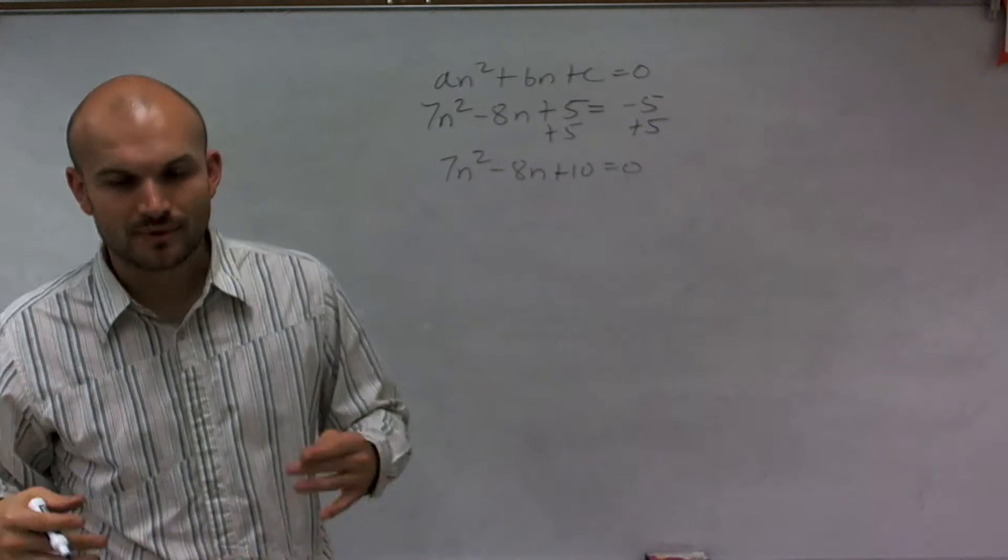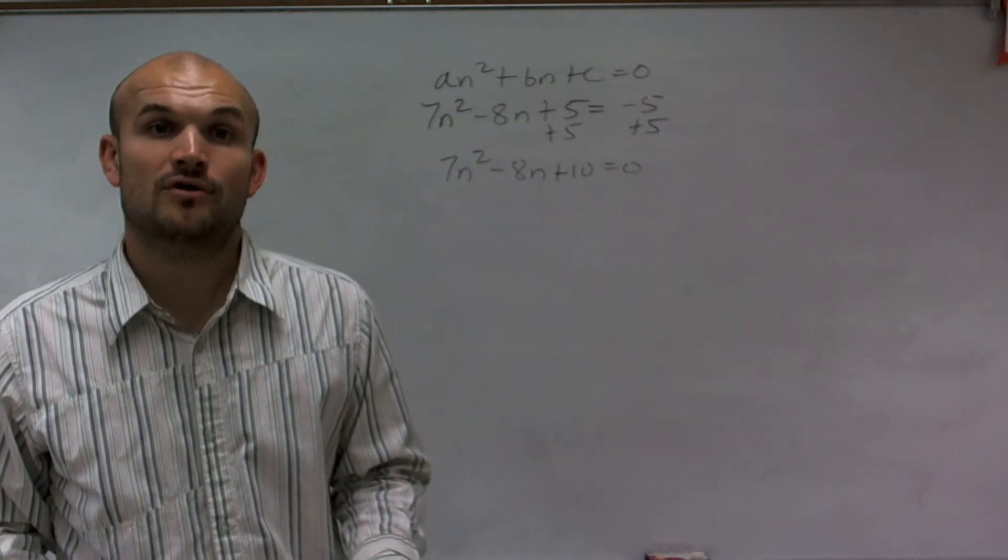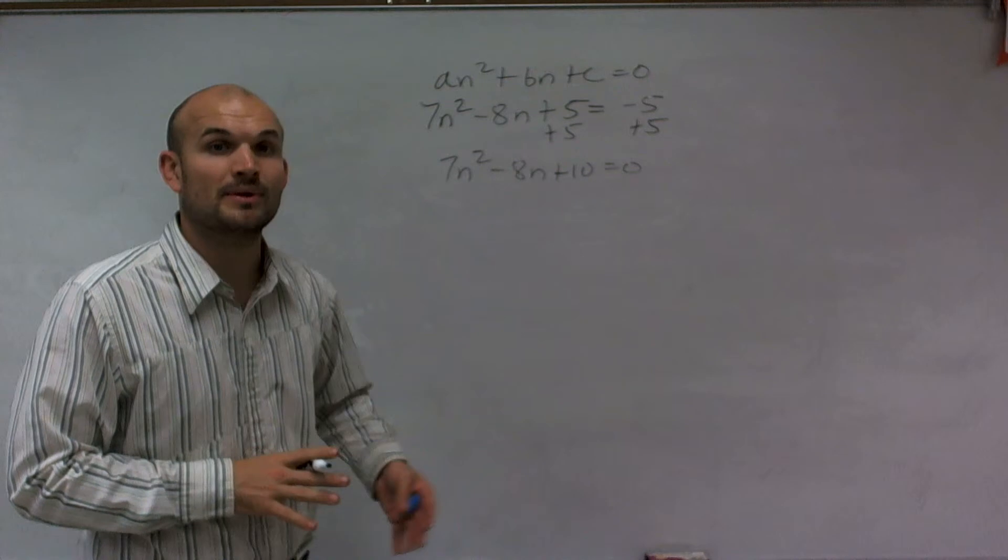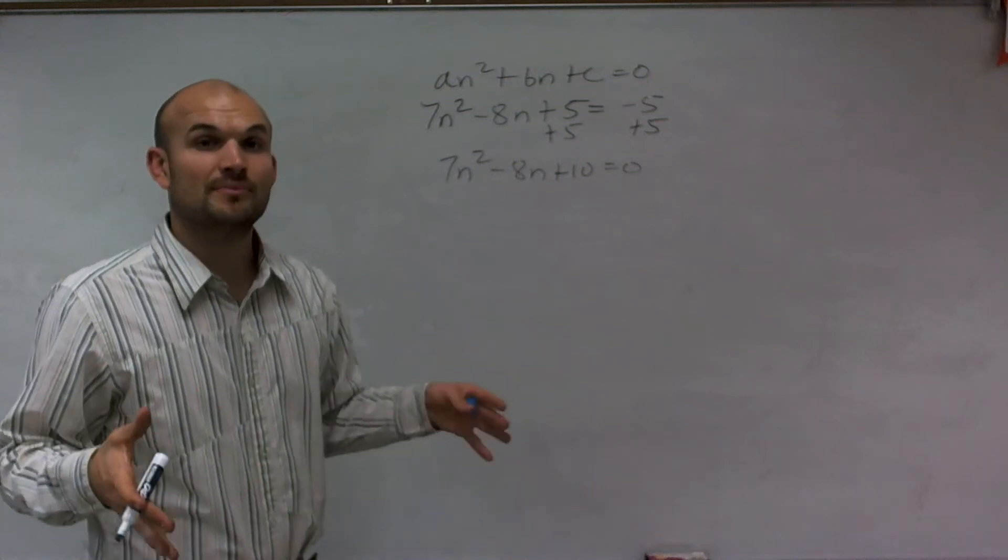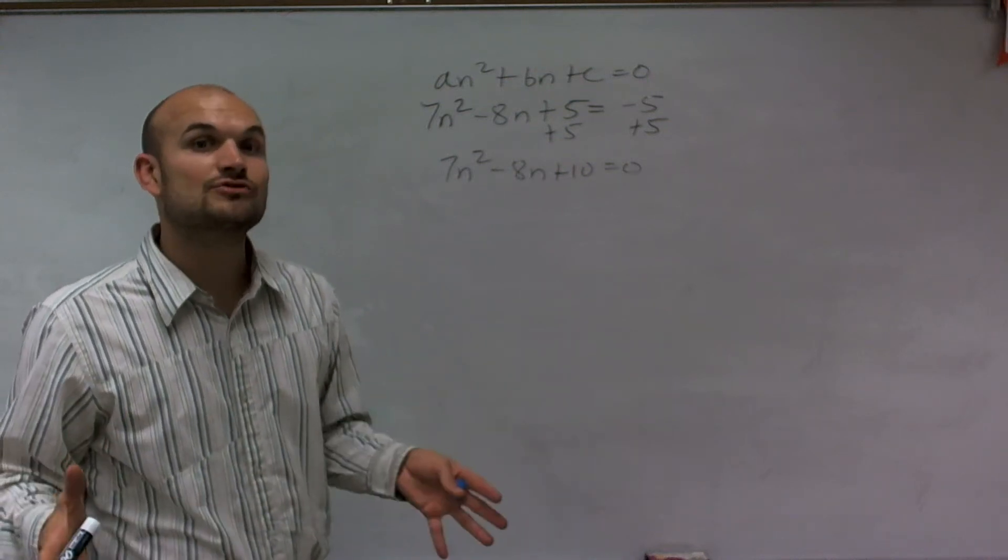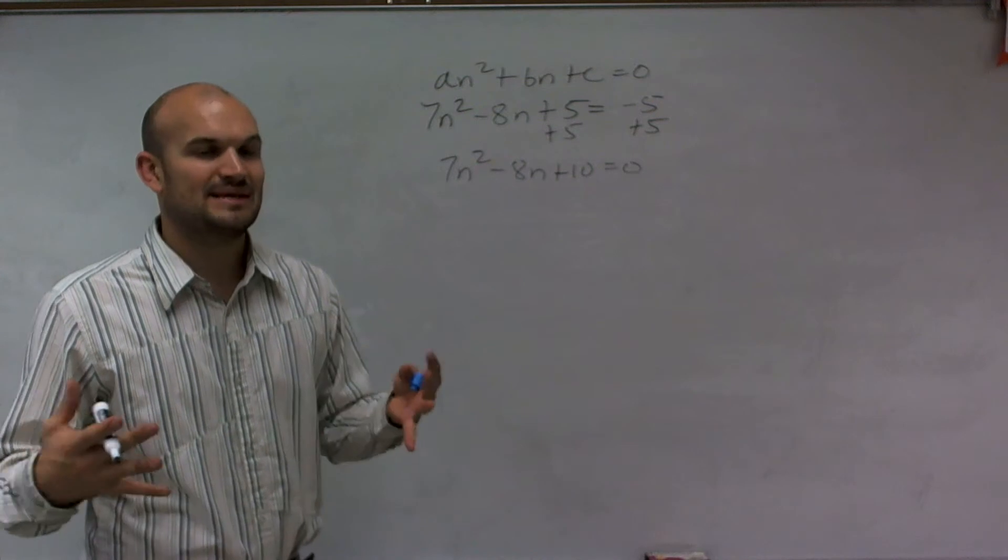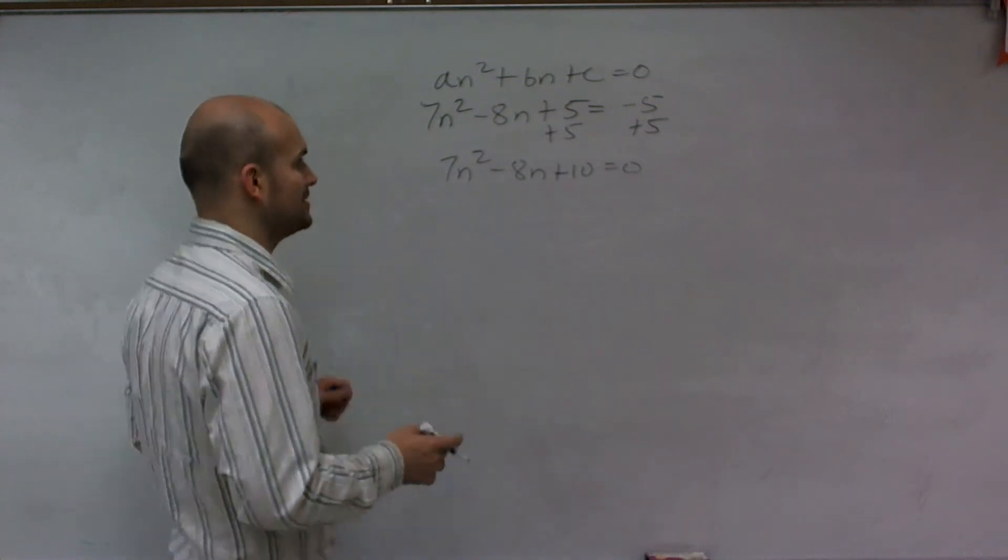And now remember what we're going to do is the discriminant comes from the quadratic formula. So I'm going to set this up just like I do the quadratic formula. And when I take the square root, the number that's inside that square root is going to be my discriminant that's going to tell me the behavior of the solution.